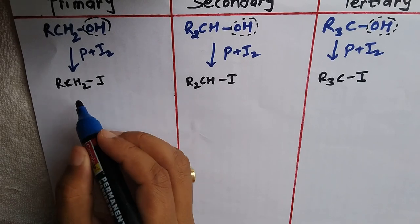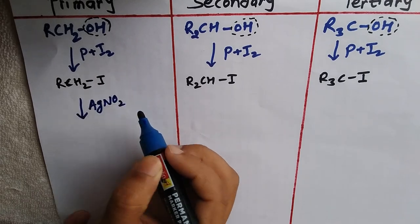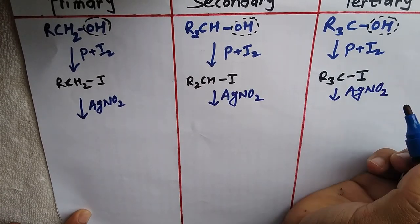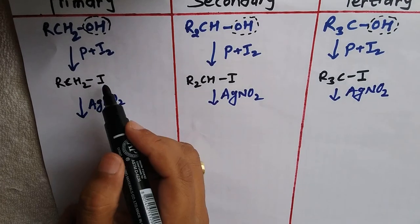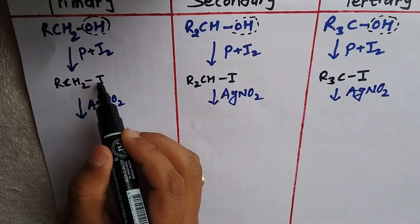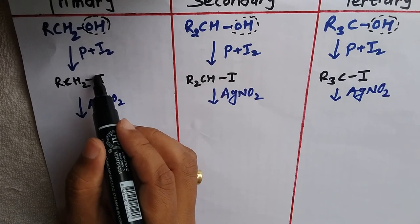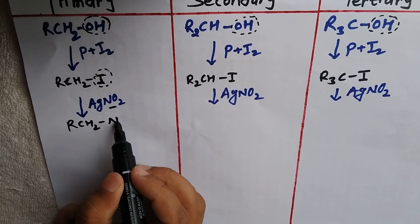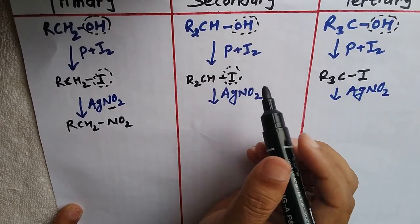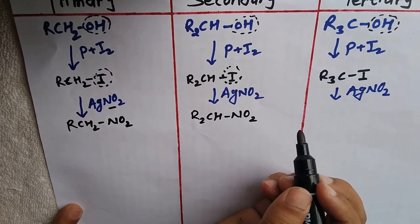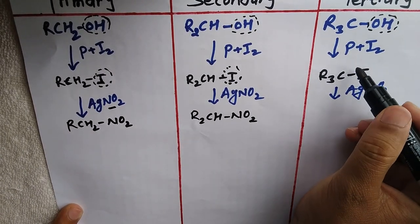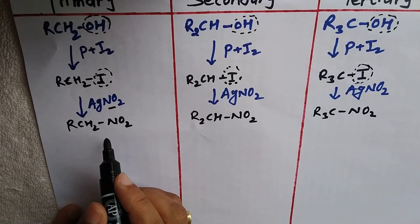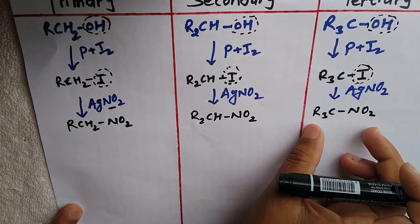The alkyl iodide is then treated with silver nitrite (AgNO₂). The iodine is replaced by the NO₂ group, converting the alkyl iodide into its corresponding nitroalkane. So RCH₂I gives RCH₂NO₂ (primary nitroalkane), R₂CHI gives R₂CHNO₂ (secondary nitroalkane), and R₃CI gives R₃CNO₂ (tertiary nitroalkane).